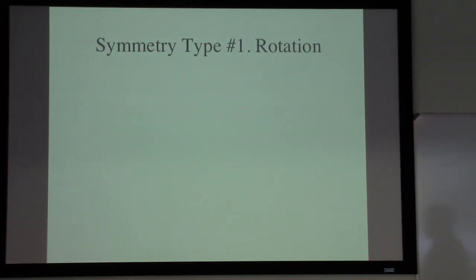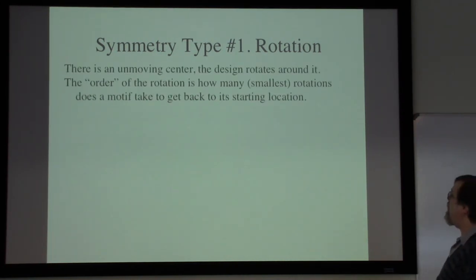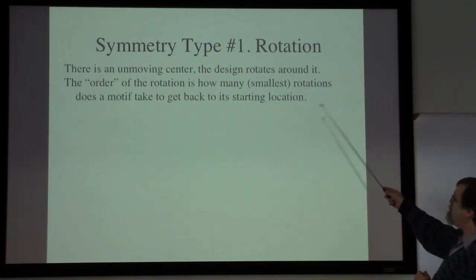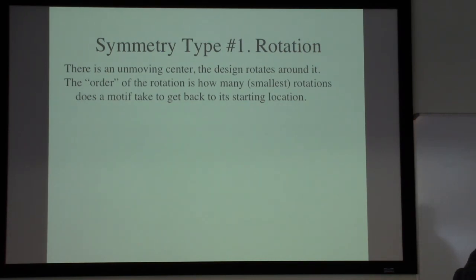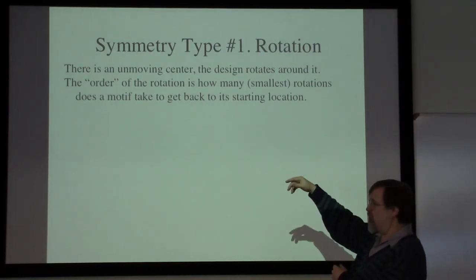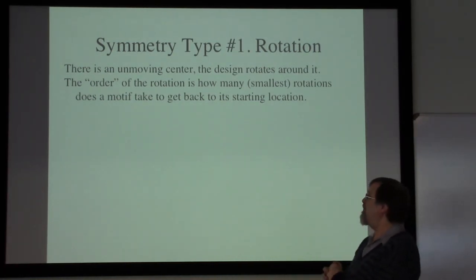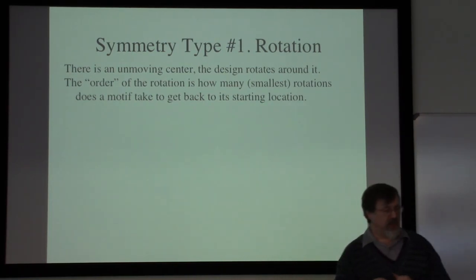There are fundamentally four types of symmetries we need to pay attention to. The first is rotation, where there is an unmoving center point and the design rotates around it. The number of times you can rotate before returning to the starting position is called the order of the rotation — a technical term we'll use throughout.